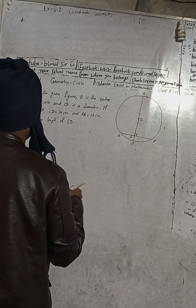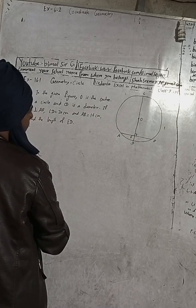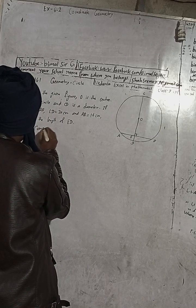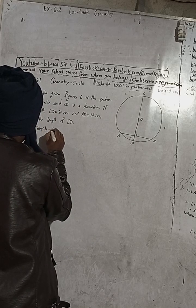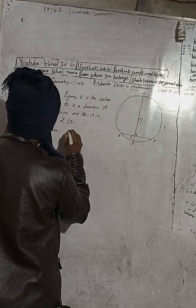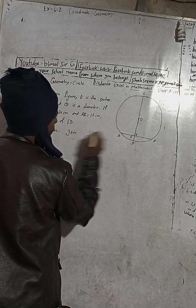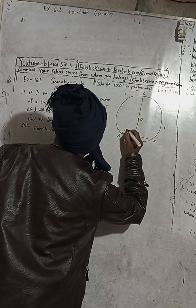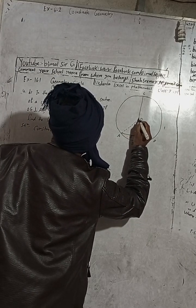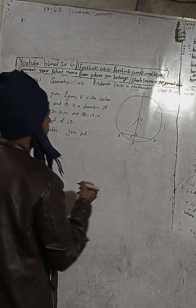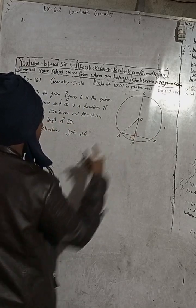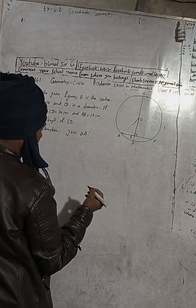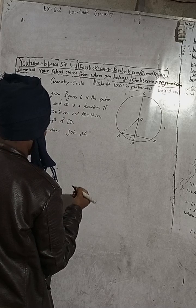First, we do a construction. Construction: join OA. Joining OA means this line is a radius, because it passes from the center O to one end of the circumference of the circle.